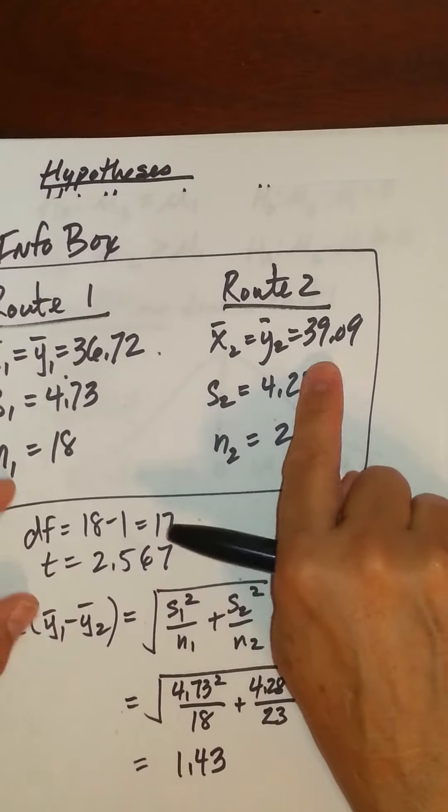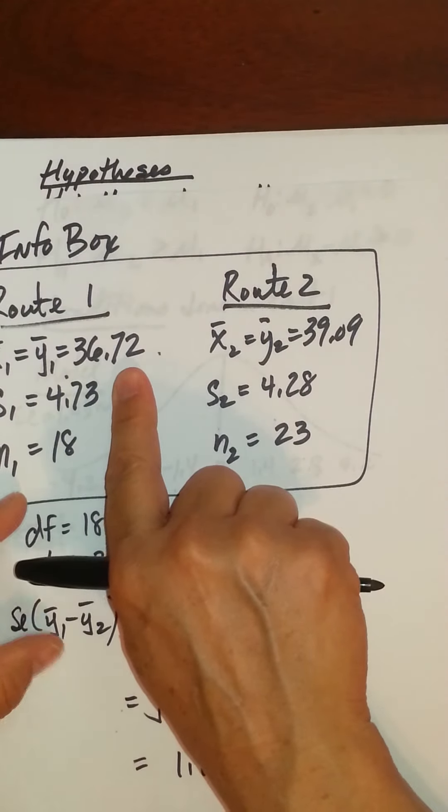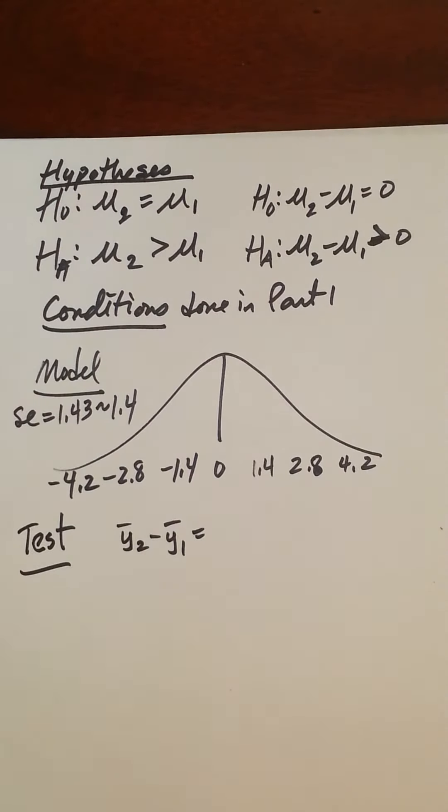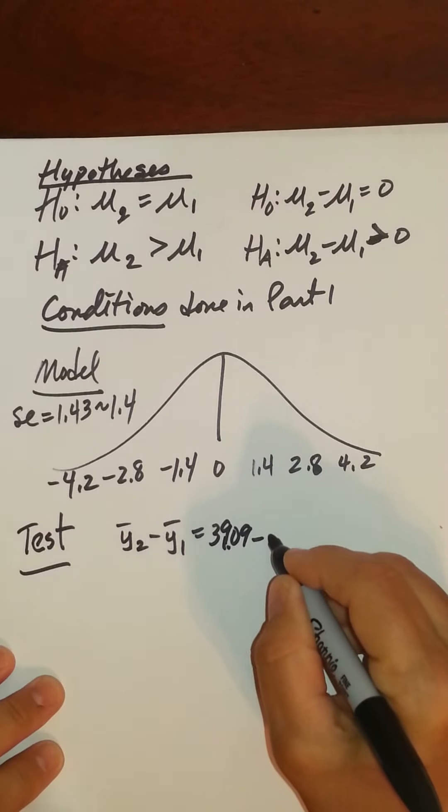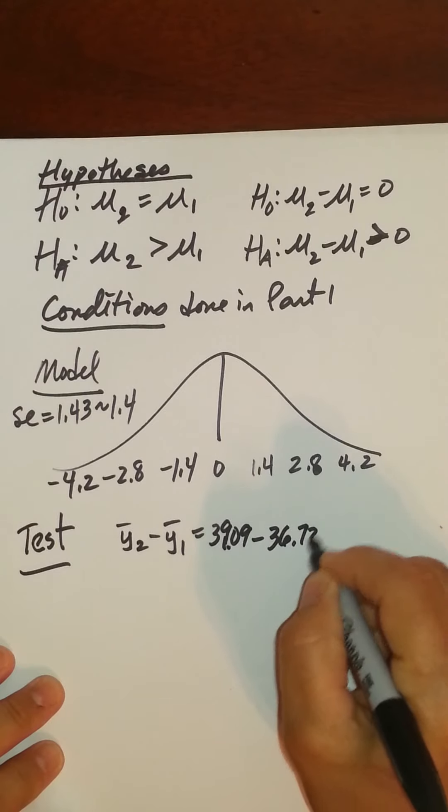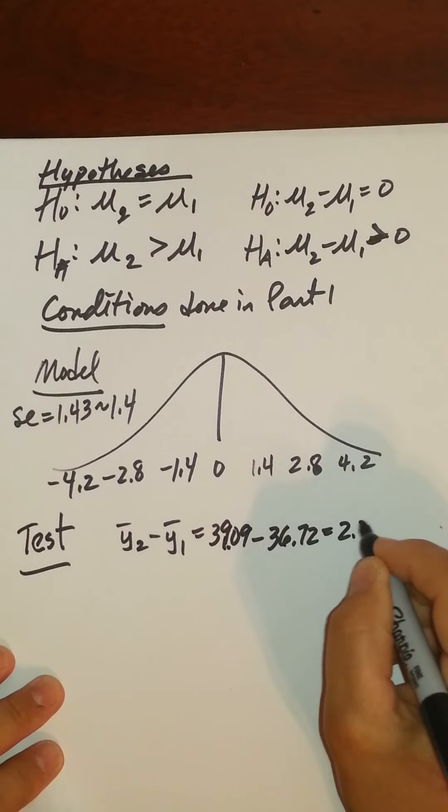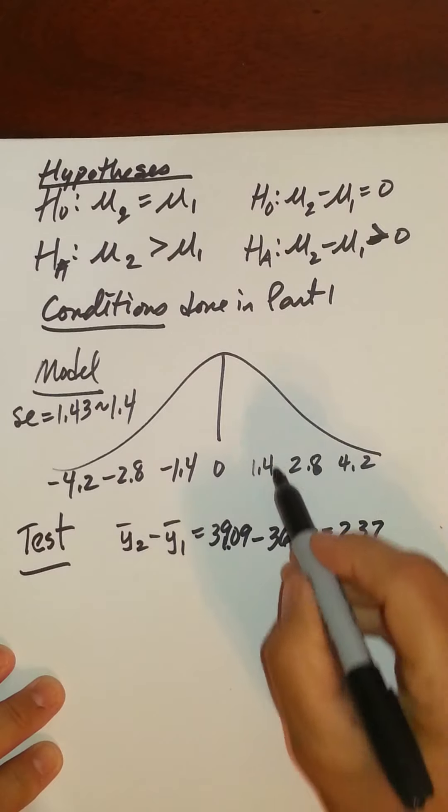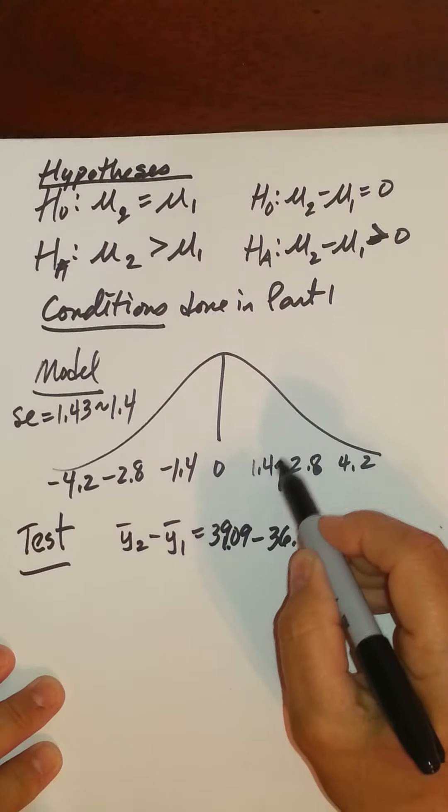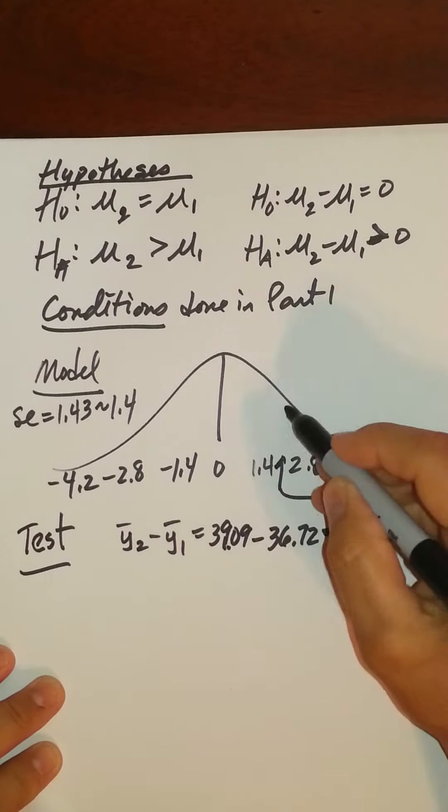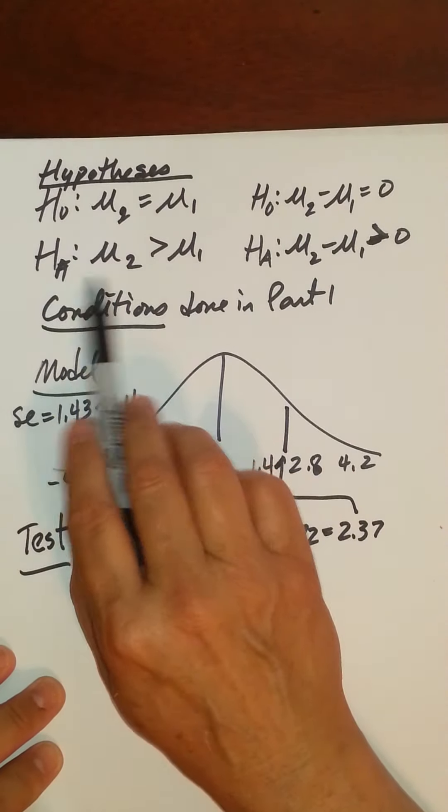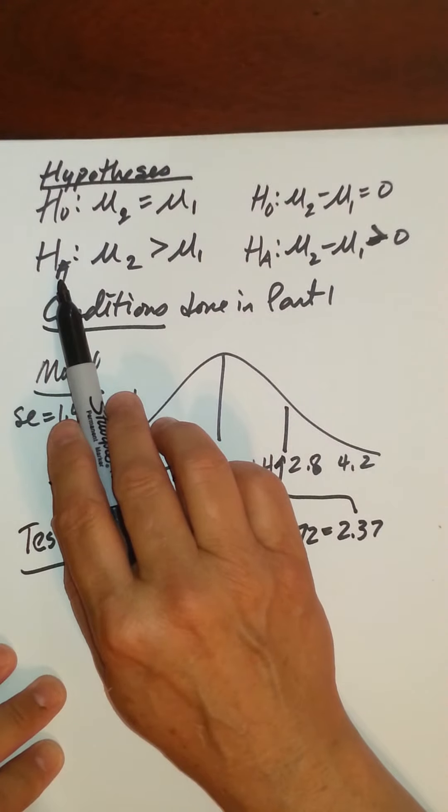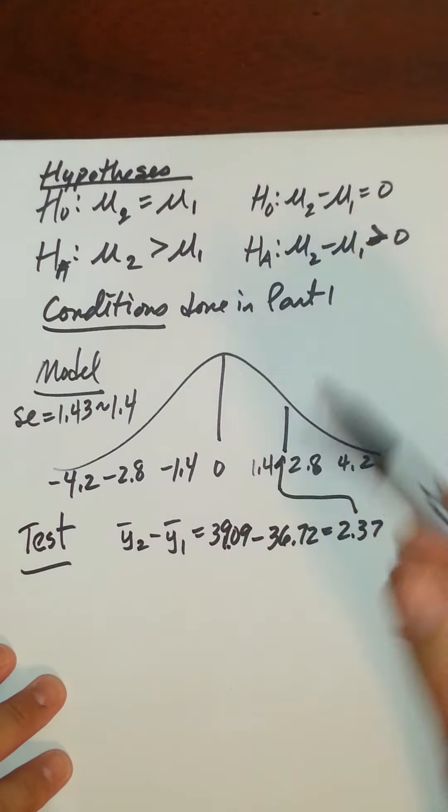Now we go to our info box, that would be 39.09 minus 36.72. So 39.09 minus 36.72 is 2.37. And you can see that sample difference would be right around here somewhere. And because I stayed consistent in my order of subtraction, I can allow this alternative hypothesis to let me know which direction to shade. It's greater than, so I shade greater than.